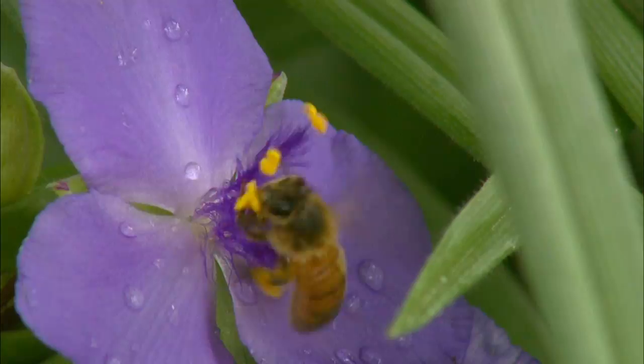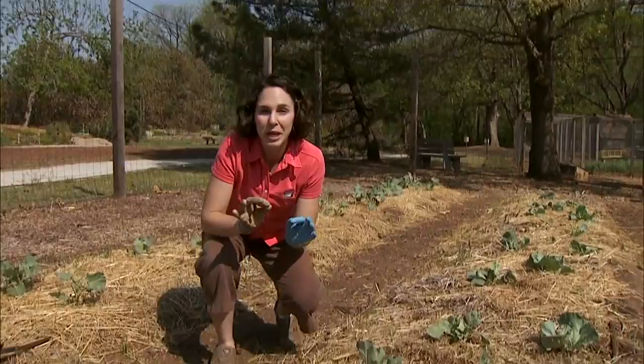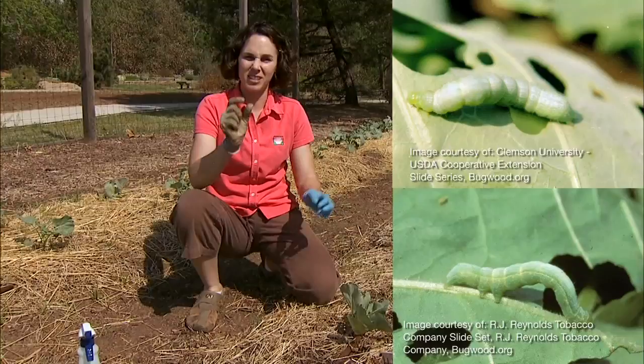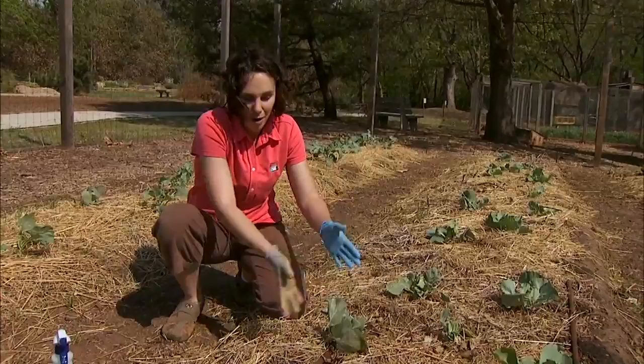Today I'm using a microbial insecticide to manage cabbage worms in our broccoli and cabbage plants. Cabbage worms include two key species: the imported cabbage worm and the cabbage looper. Both of these, the larvae feed on the foliage as well as in those developing heads — they're probably pretty familiar to us. We see those little worms; a lot of times when we boil up our broccoli, they'll come floating out.